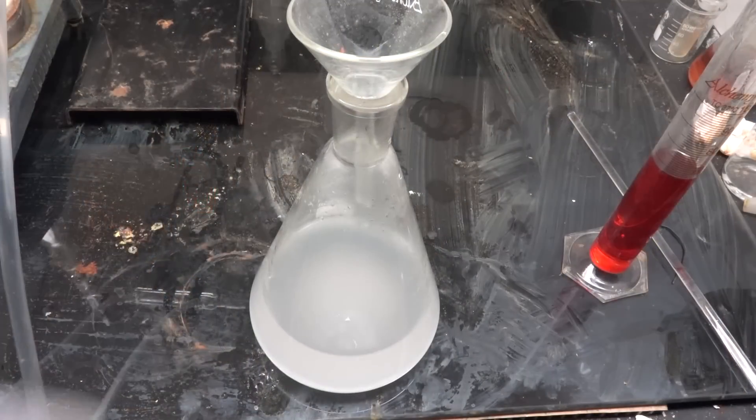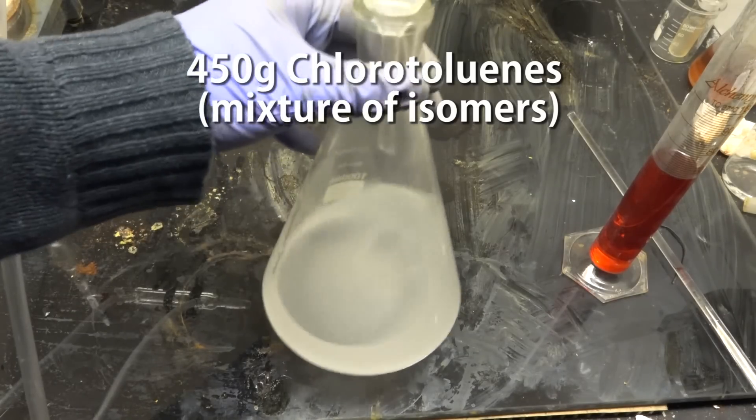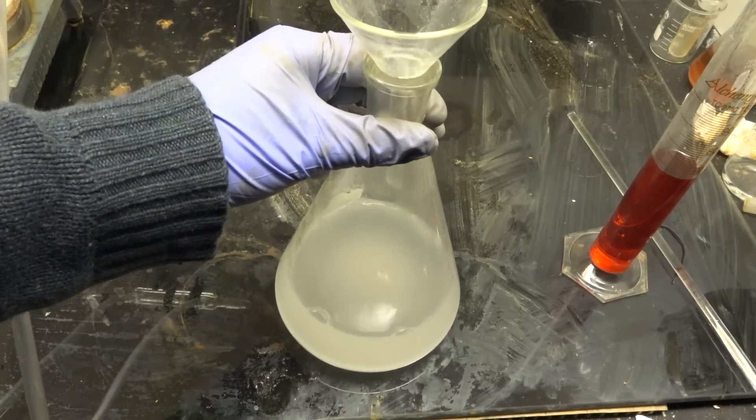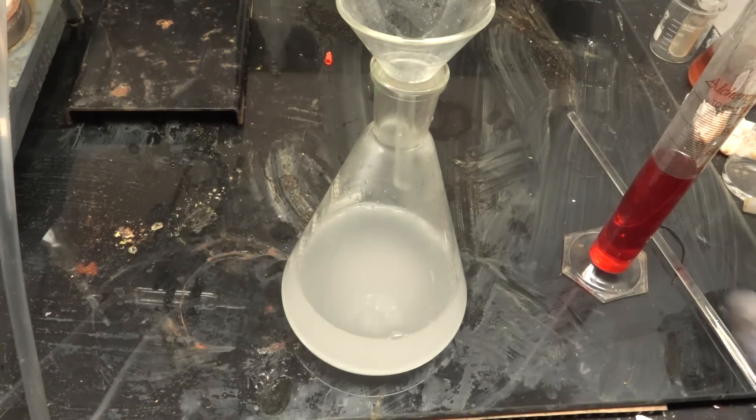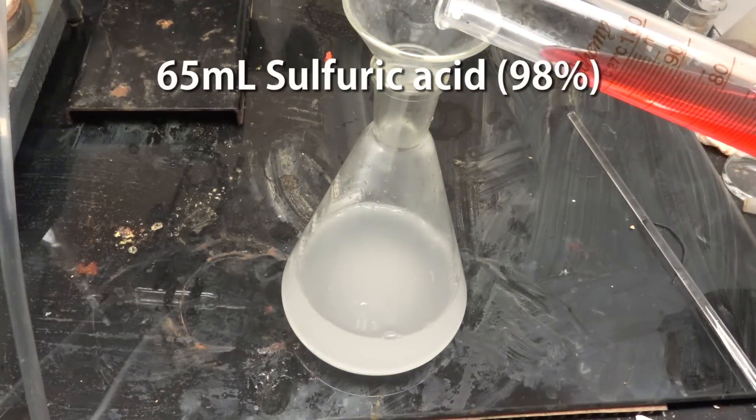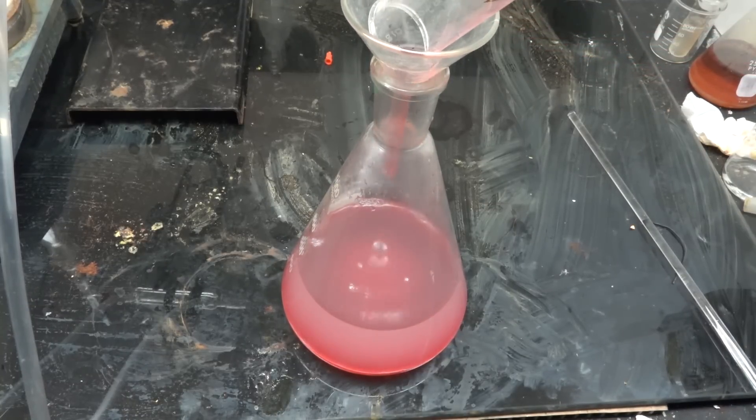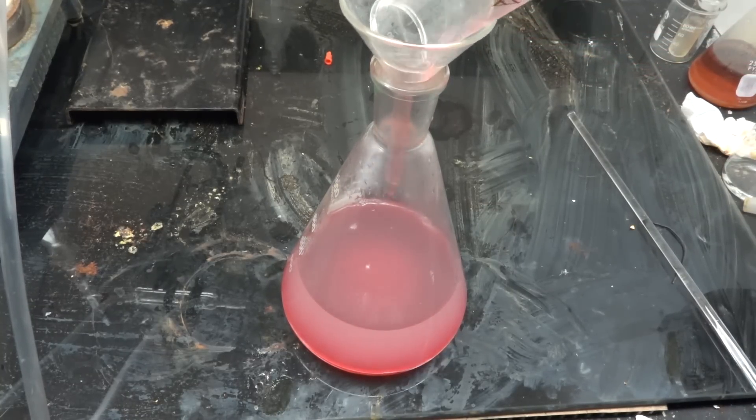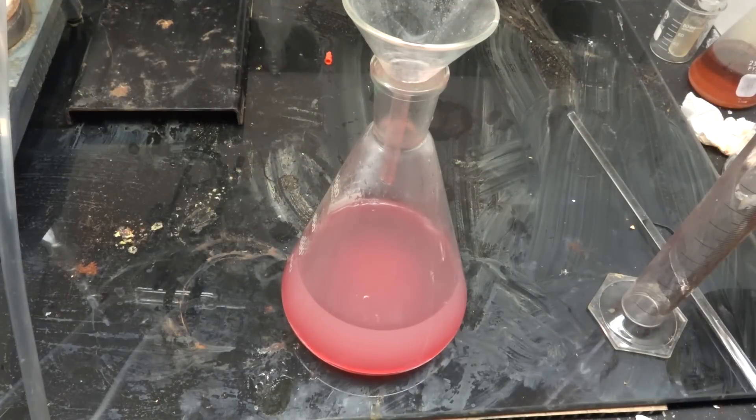So here is our mixture of chlorotoluene isomers, about 450g worth. Now chlorotoluene is clear but my sample is cloudy due to tiny amounts of water. This is not a problem though. Now add about 65mL of concentrated sulfuric acid. This corresponds to a one-third molar equivalent. My acid is red because it's a low grade drain cleaner acid. High quality acid will work better but isn't strictly necessary.